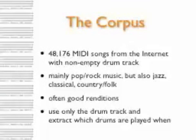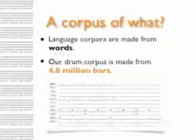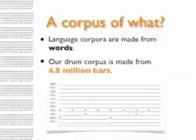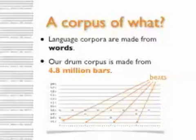Since we are obviously interested in the drums, let's fade out the other instruments — and this is what stays with us: the drums. We use only the drum track and extract from the MIDI file which drums are played when. So what will the corpus actually consist of? Language corpora are made from words; our drum corpus is made from 4.8 million bars. Here at the bottom is one of these bars as a little diagram — a bar in 4/4, so on the horizontal axis there are four beats.